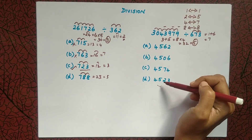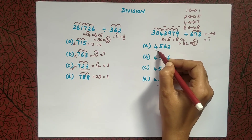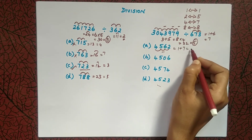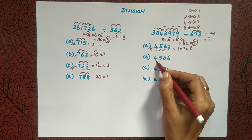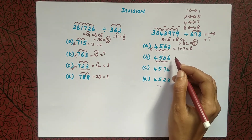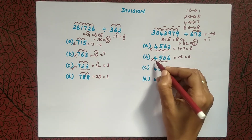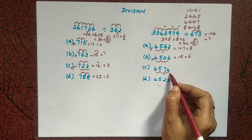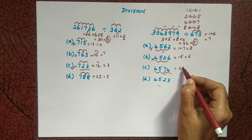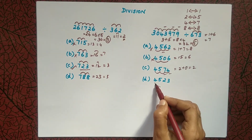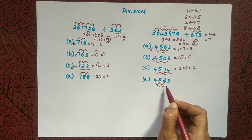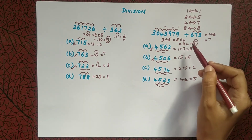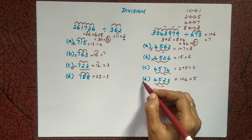Now we check which option gives 5. First option: 4 plus 5 is 9, 9 plus 6 is 15, giving 6; 6 plus 2 is 8 — not the answer. Second option: 4 plus 5 is 9, 9 plus 6 is 15, giving 6 — not right. Third option: 4 plus 5 is 9, 9 plus 7 is 16, giving 6; 6 plus 4 is 10, so 1 plus 0 is 1 — not matching. Fourth option: 4 plus 5 is 9, 9 plus 2 is 11, 1 plus 3 is 4; 1 plus 4 gives 5. We get 5, so this is the correct quotient.